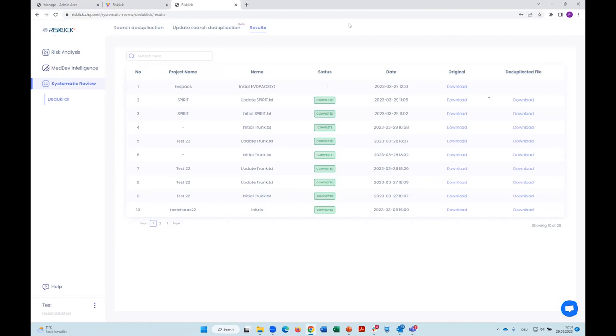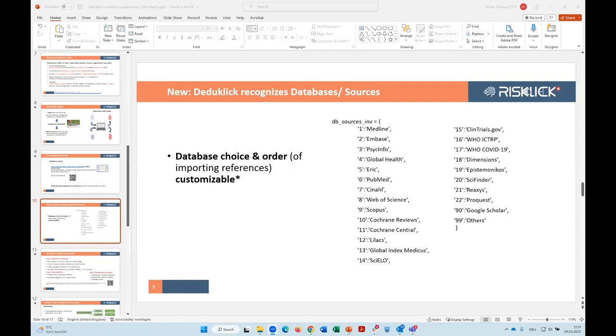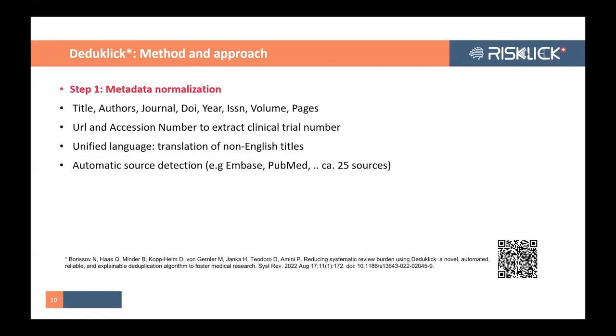How did we validate the algorithm and what were the results? First, what is behind DeduClick and how does the algorithm work? This is a step-by-step process. The first step is metadata normalization: automatic recognition of the source, normalizing title, author, journal, DOI, URL, unifying language by translating from non-English to English, and automatic source detection. So far we have 25 sources. If you realize a source wasn't detected, please send us an email and we can easily add it to our list.